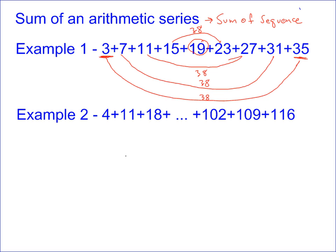19 is the middle one. 15 and 23 average to 19, 11 and 27, 38 divided by 2 is 19 and so on. You've got 9 numbers all with an average of 19.